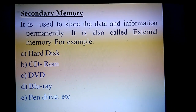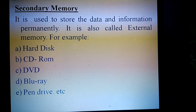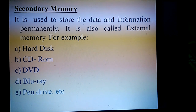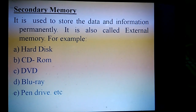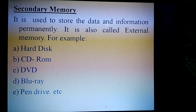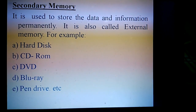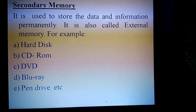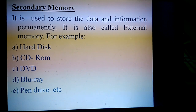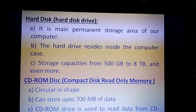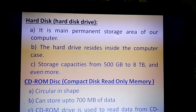The second part of computer memory is secondary memory. It is used to store data and information permanently. It is also called external memory. Examples include hard disk, CD-ROM, DVD, Blu-ray, and pen drive.